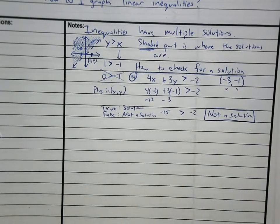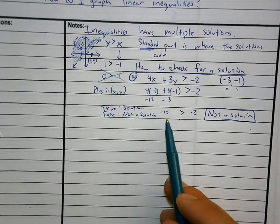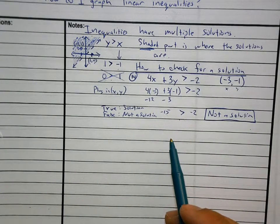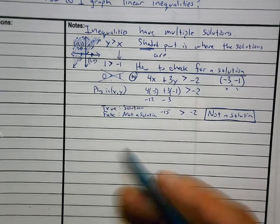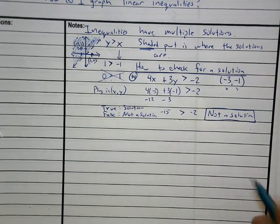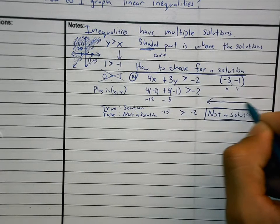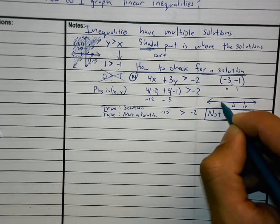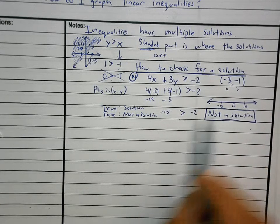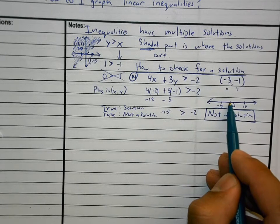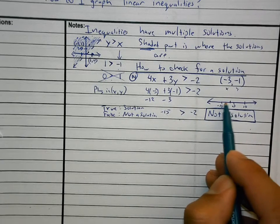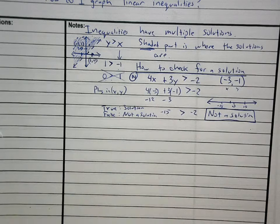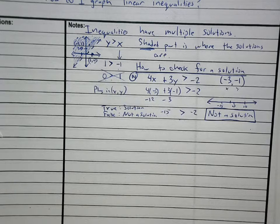Keep in mind, if you ever get confused about what's bigger: whatever is bigger is on the right side of the number line. Negative 2 is to the right of negative 15, so negative 2 is bigger. The numbers on the right are bigger than the numbers on the left on the number line.